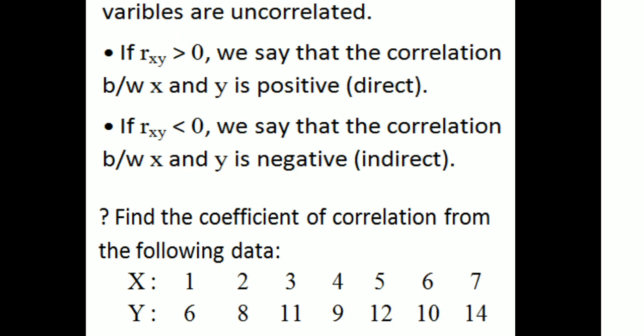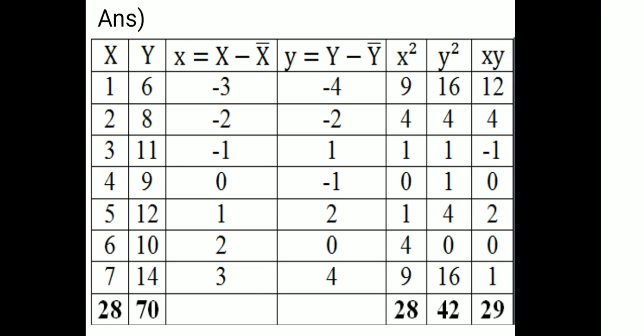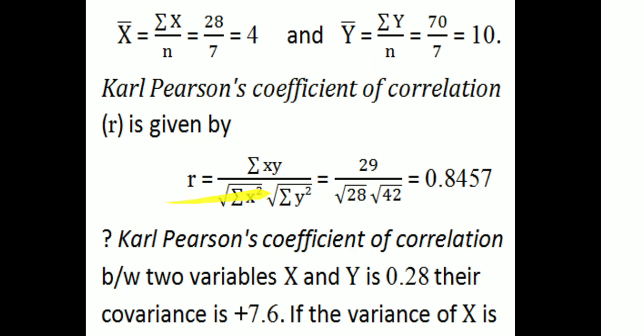We have the data values. The correlation coefficient R is equal to summation xy divided by the square root of summation x-squared into summation y-squared. This can also be written as the covariance of x and y divided by sigma x into sigma y.